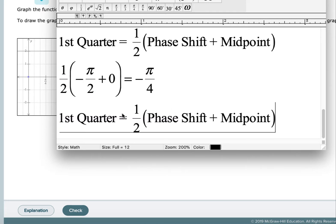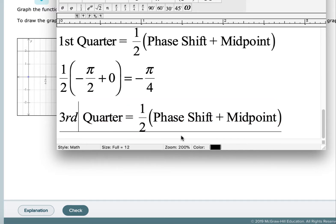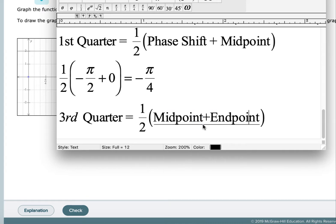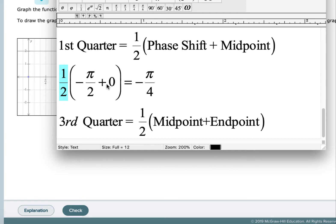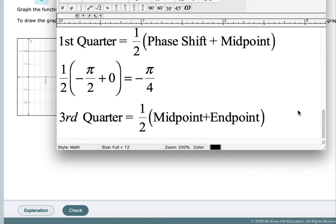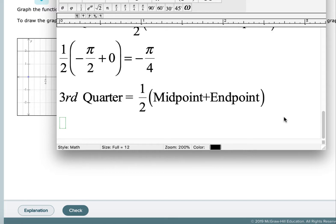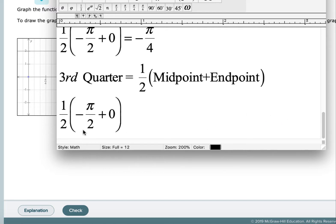And then to find the third quarter point, we're going to take one half, not the phase shift, but the midpoint plus the endpoint. So we're going to have one half of the midpoint, which was zero, plus π over 2. And because of symmetry, we can begin to see, if we look at the graph, it works out nice. But there's a little hitch with the graph, as we'll see in a minute. So we're going to take the midpoint, which is zero, and add it to the endpoint, which was π over 2. So you're going to get π over 4.